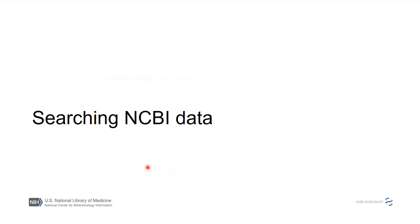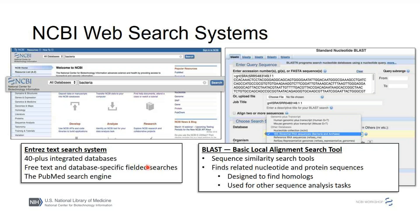There are basically three ways to search our data on the web. The first is the Entrez system — what you're using when you come to our web pages and type something into a box and click search. There are 40 integrated databases here and you can use complex fielded queries. This is the main engine behind PubMed. The other main way is BLAST — basic local alignment search tool — our sequence similarity search tool for identifying sequences similar to your query, originally designed to find homologs in other species.